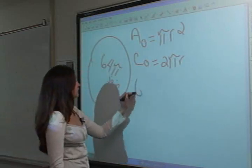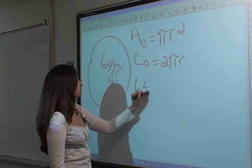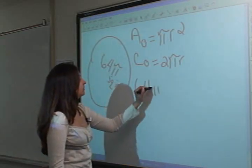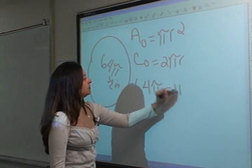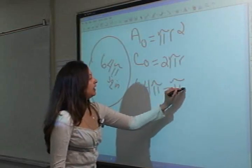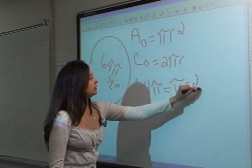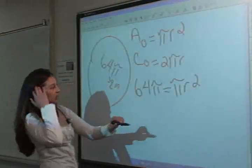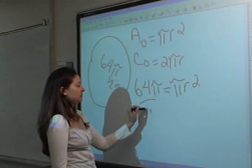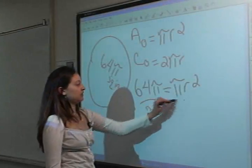So since we already have the area of the circle, we just plug it in. We have 64 pi equals pi radius squared, and the first thing we are going to do is cancel out our pi's by dividing by pi.